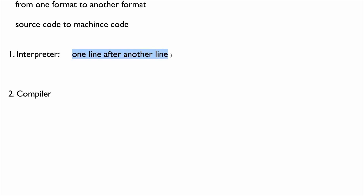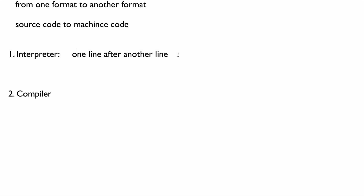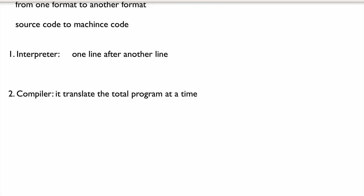An interpreter translates a program one line after another line. For example, if there is a 100-line program, it reads the first line, translates it, then moves to the second line, and so on. If there is an error on a particular line, it stops at that line. A compiler, on the other hand, reads the total program at once before translating.